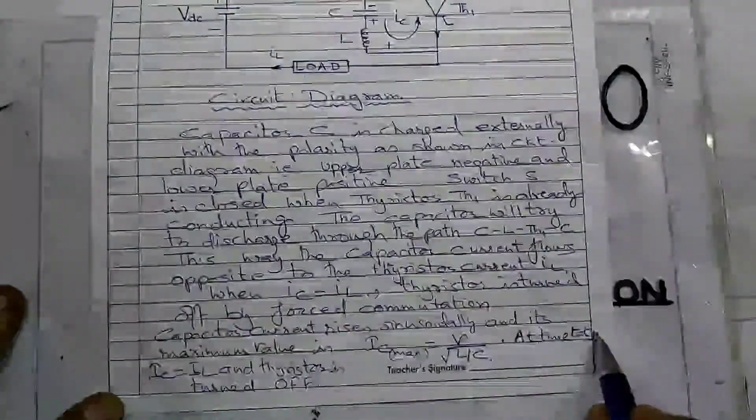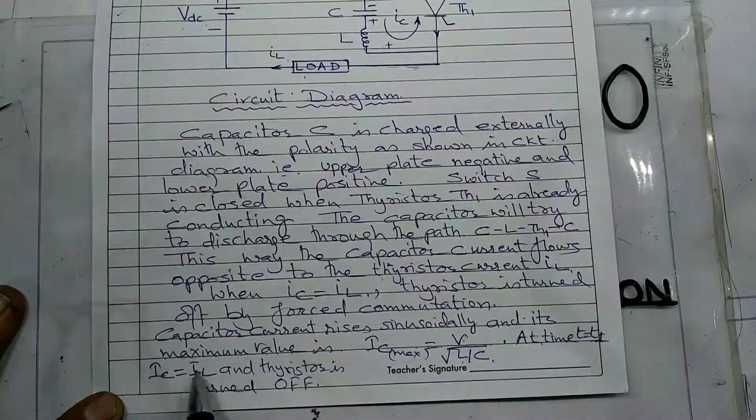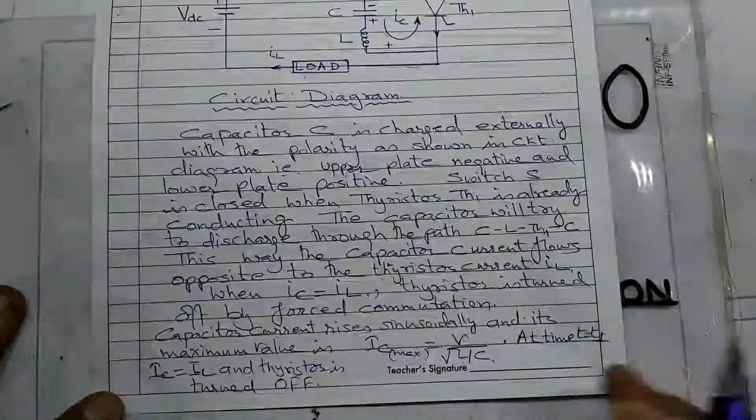At time T equal to T1, when IC is equal to IL, the thyristor is turned off.